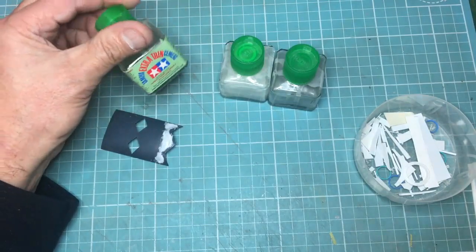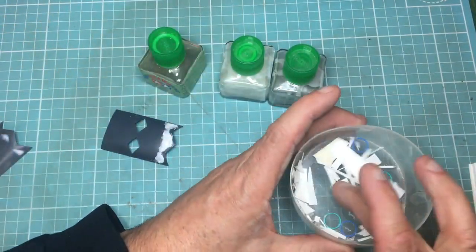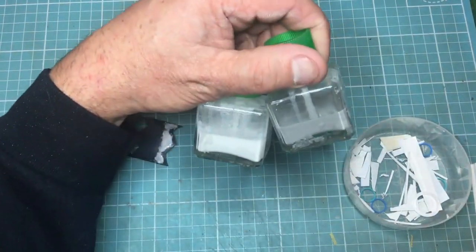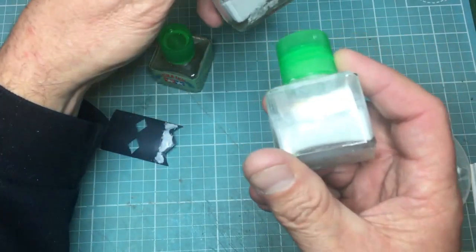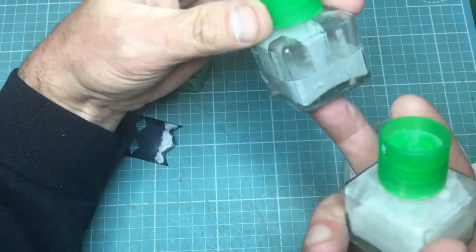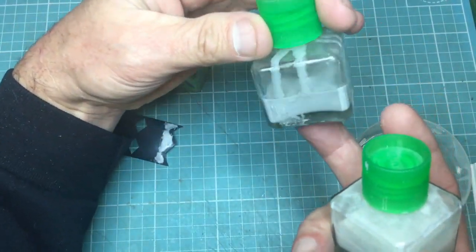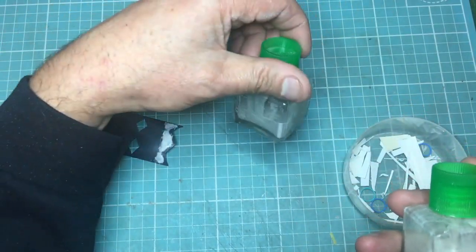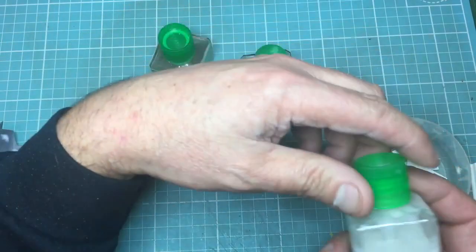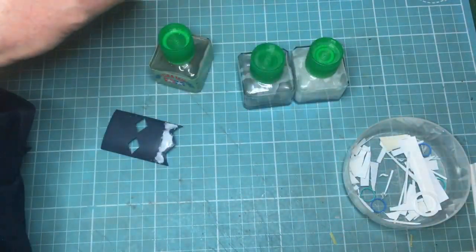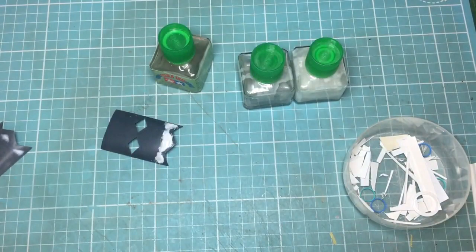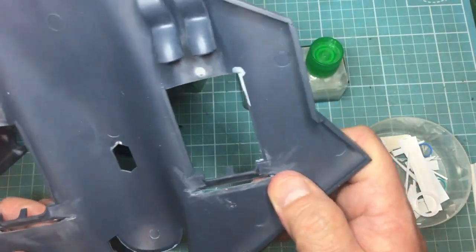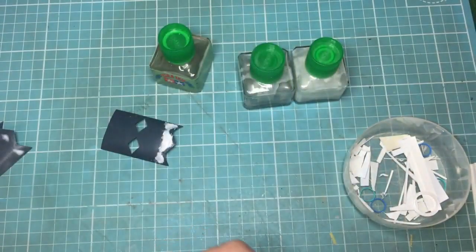Now a lot of people say you should only use white styrene, other people say you can use anything. I've got two here. This one is pure white styrene as you can see, this one is Dragon plastic. I tried to make one out of Model Collect plastic. Model Collect plastic is quite thick, it's quite hard, it almost feels quite waxy.